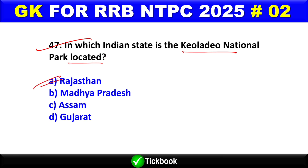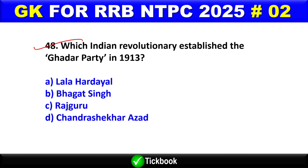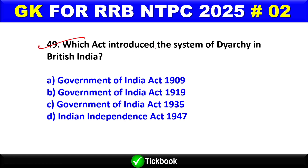Question number 48: Which Indian revolutionary established the Ghadar Party in 1913? Option A is the right answer — Lala Hardayal. Question number 49: Which act introduced the system of diarchy in British India? Option B is the right answer — the Government of India Act, 1919.